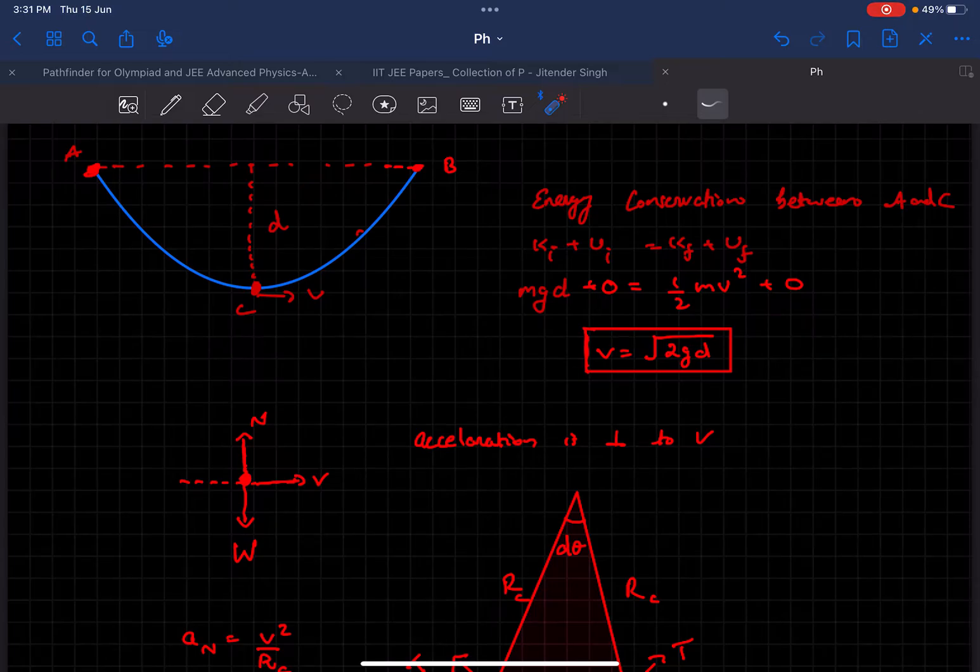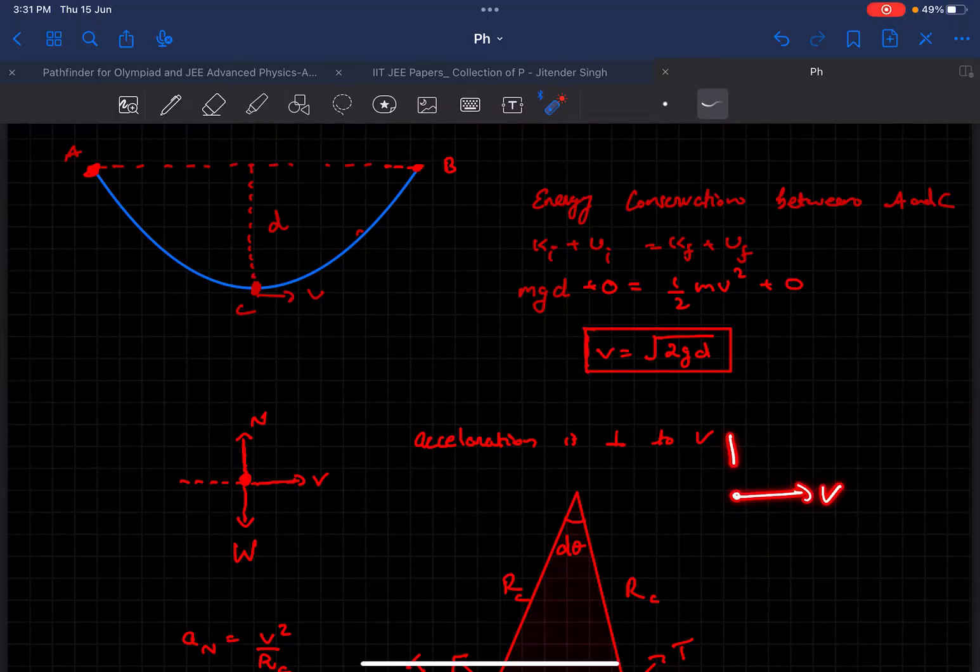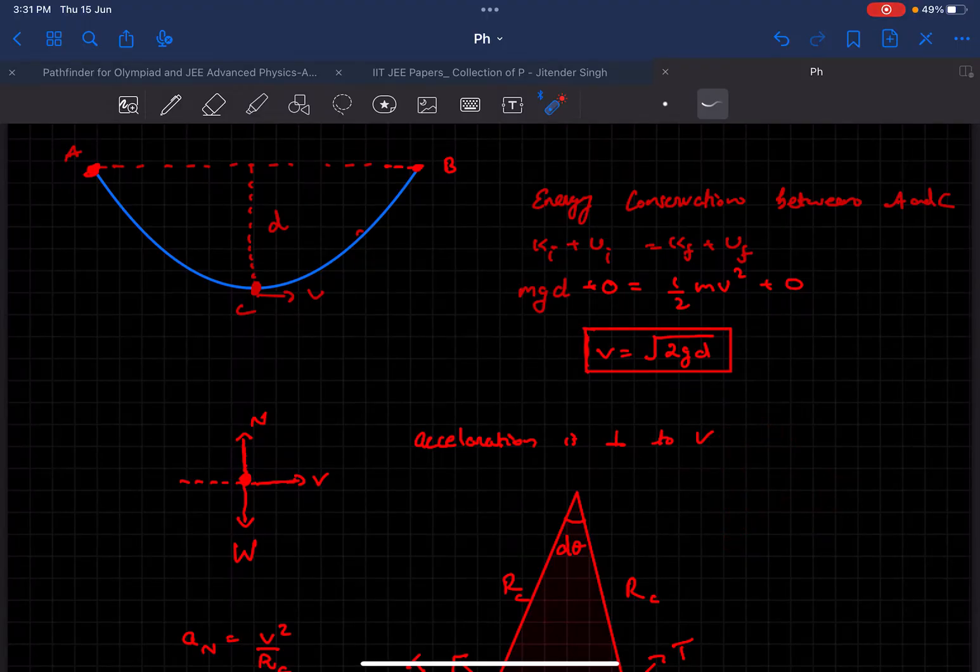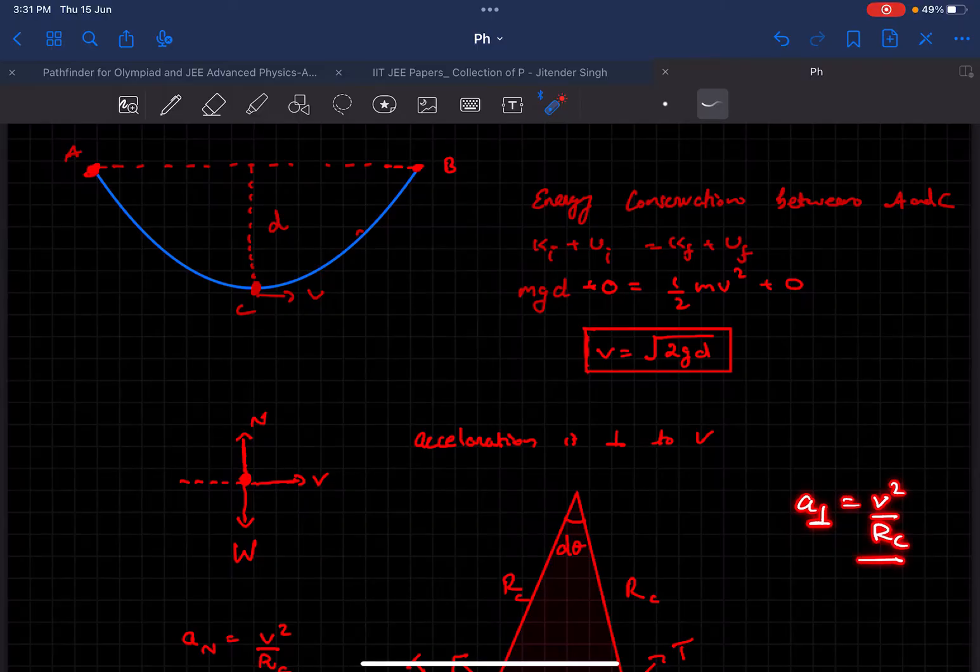In this case, as we know the velocity and the acceleration is normal to the velocity, if we could find out the radius of curvature at point C, then we can determine the perpendicular acceleration as v² divided by the radius of curvature at that point. So that is what we are going to be doing.